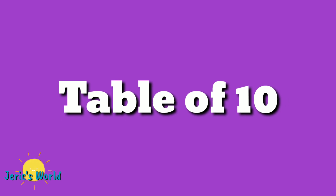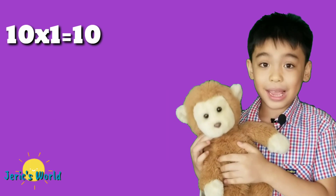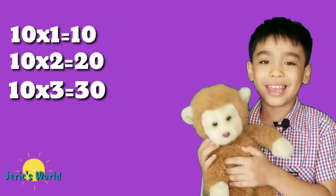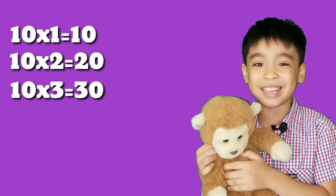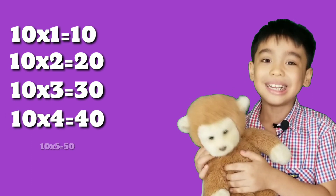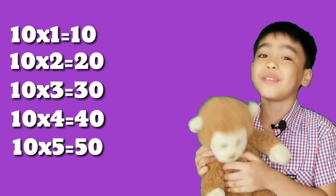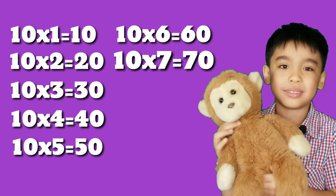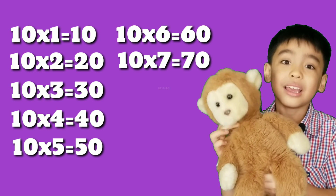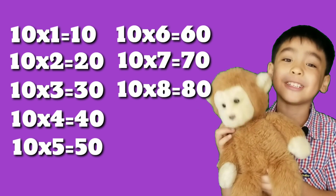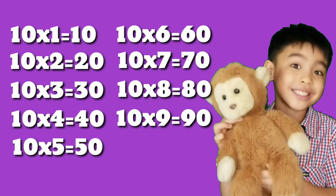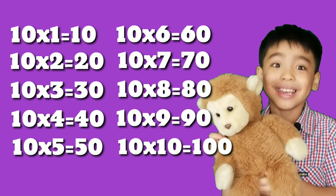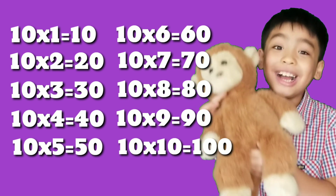Table of 10. 10 times 1 equals 10. 10 times 2 equals 20. 10 times 3 equals 30. 10 times 4 equals 40. 10 times 5 equals 50. 10 times 6 equals 60. 10 times 7 equals 70. 10 times 8 equals 80. 10 times 9 equals 90. 10 times 10 equals 100.